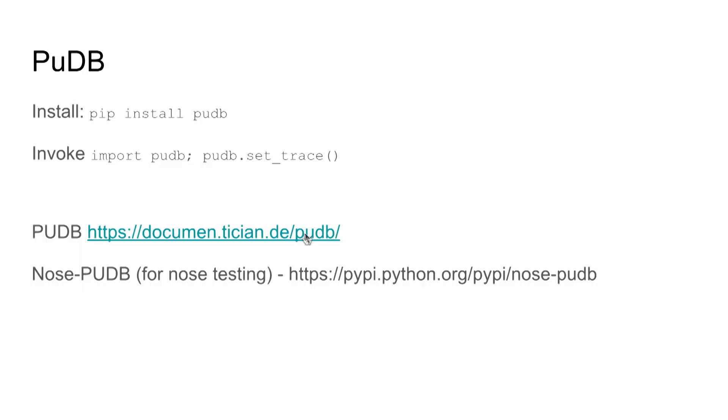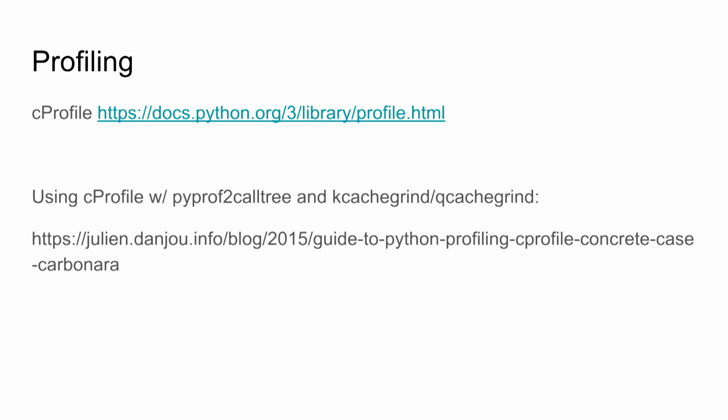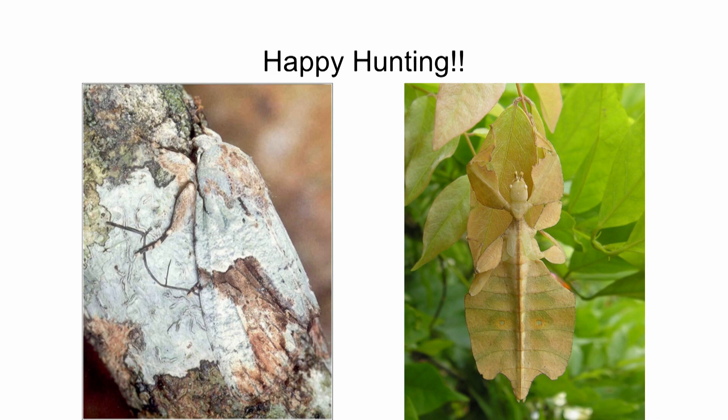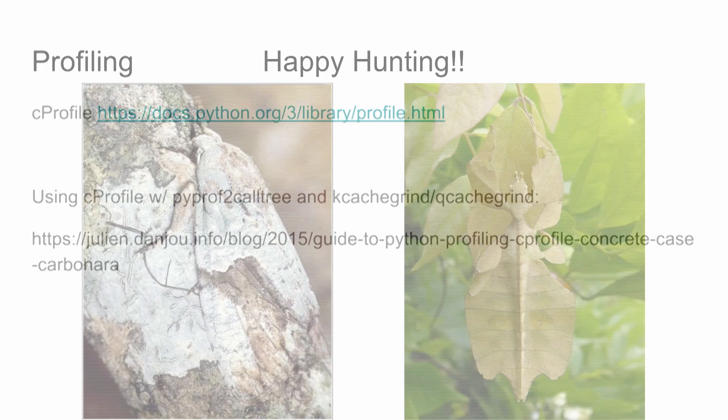Here are some notes — mostly for people who come look at this later and want to actually use these tools. Here's where you get them, and here's a blog post about how to do the magic to get KCacheGrind to look at Python profiles. Happy hunting. Thanks.